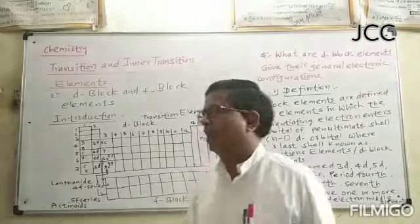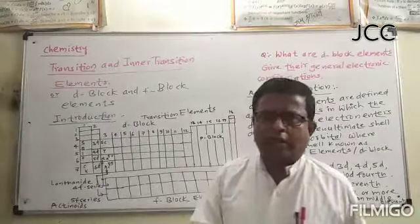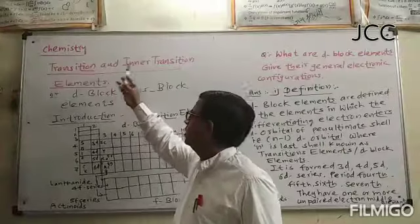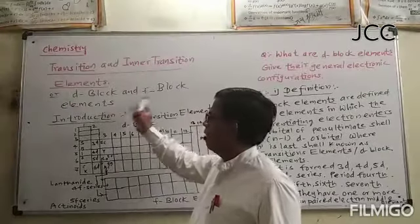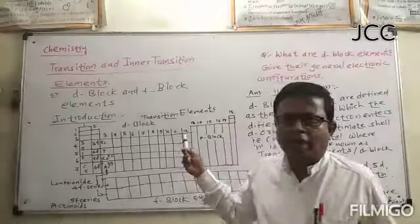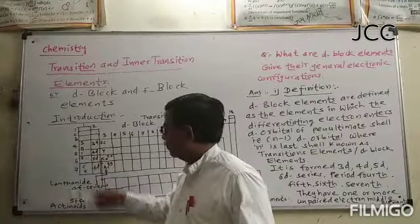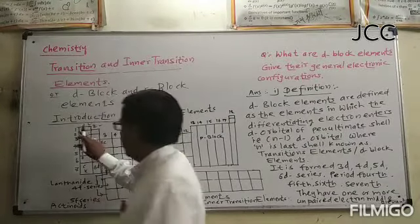These are the transition and inner transition elements. Here is the d-block and block elements. We will use the periodic table. If we look at the block of the body, then we will get the block of the body.